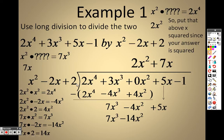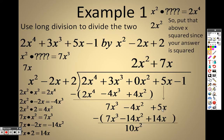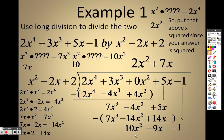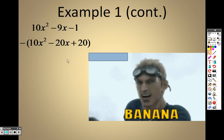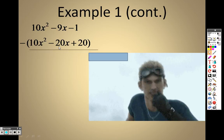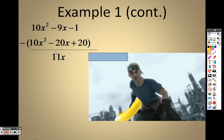7x times 2 is 14x. Remember I have to subtract the whole thing, so that gives me 0 on the first one. Negative 4x squared becomes positive 14x squared, giving me 10x squared. That becomes negative 14x, so 5x minus 14x is negative 9x, and I bring down the negative 1.